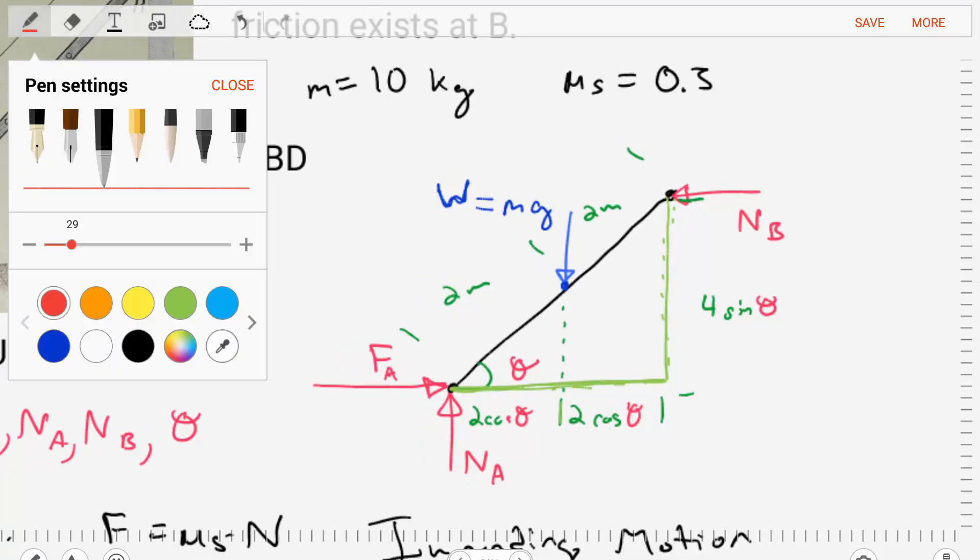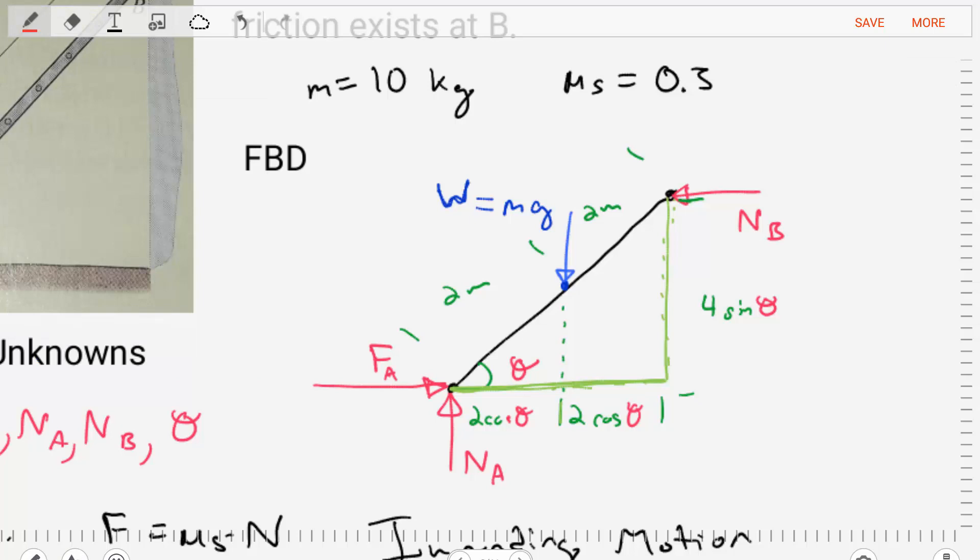The next thing we did is we freed the body. We replaced the floor and the walls with their reactions. At point A, we have a normal force from the floor, and then we have a frictional force F A that is preventing the ladder from sliding down. And then at point B, we said that we were given that no friction exists at point B. So the only unknown we have is a normal force of a ladder against the wall.